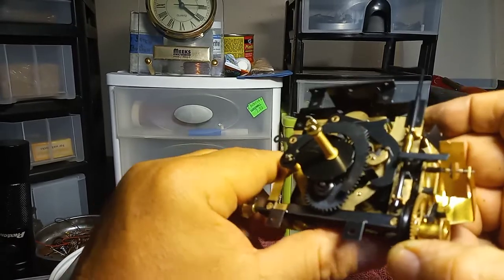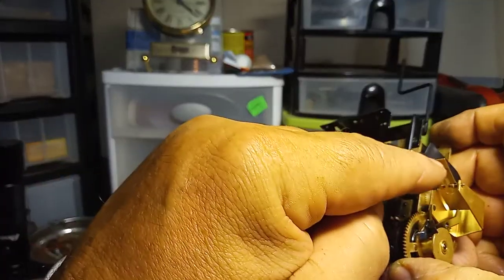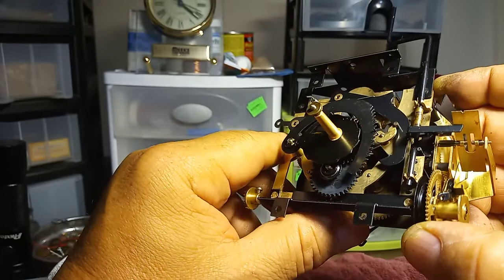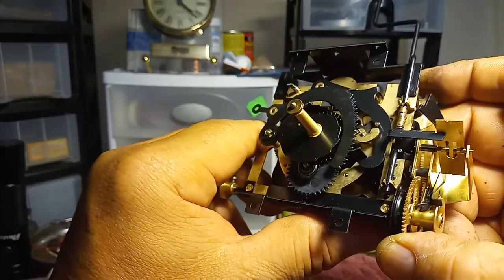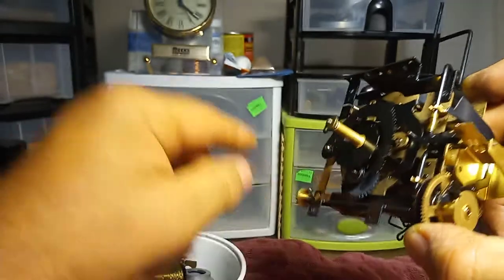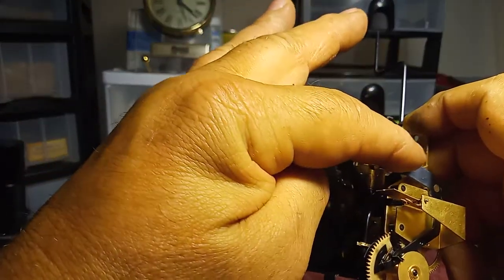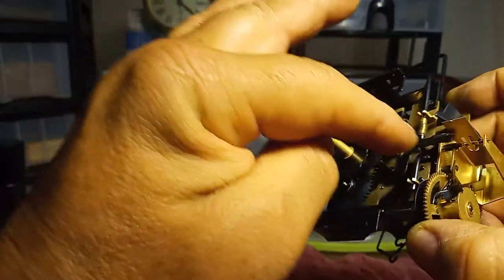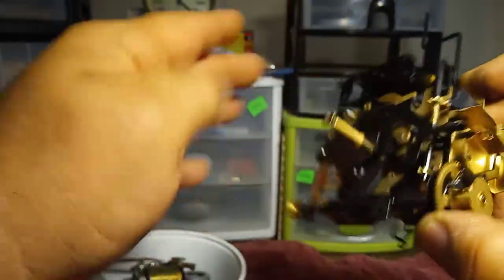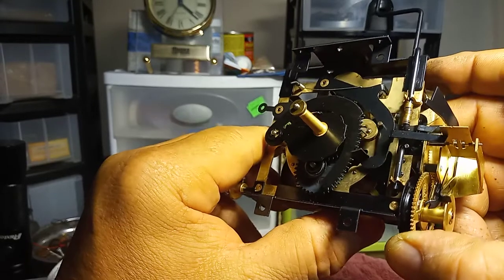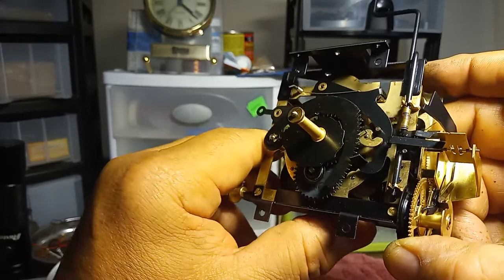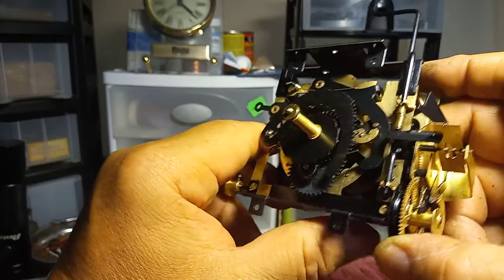As you can see, this tab is holding the governor fan. A lot of times what happens is this tab here gets bent, or this tab here gets bent, so you have to straighten them out so they do their jobs properly.